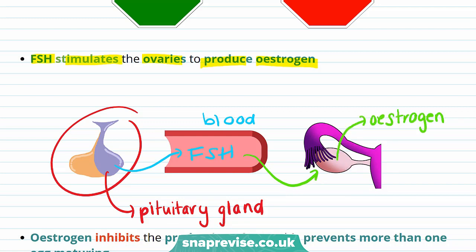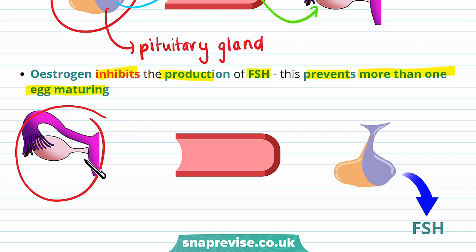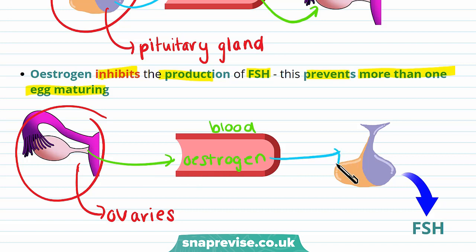Estrogen can inhibit or stop the production of FSH. This prevents more than one egg maturing, because FSH causes follicle or egg maturation. Estrogen is produced by the ovaries, travels in the blood, and then reaches the pituitary gland where it stops the production of FSH.